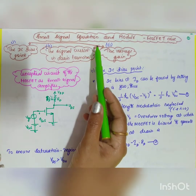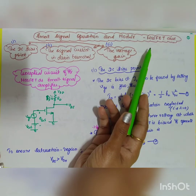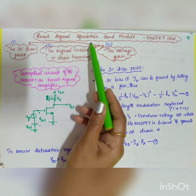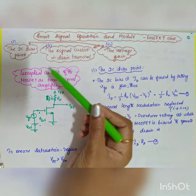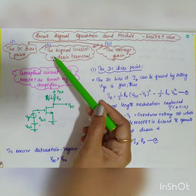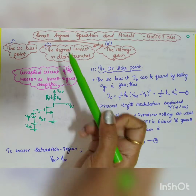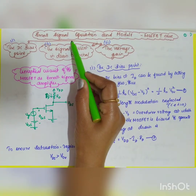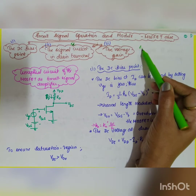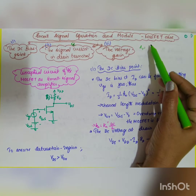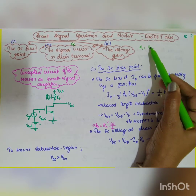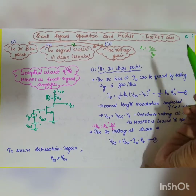The next topic in module one is small signal operation and models for the MOSFET. We have already seen BJT; now it is for MOSFET. Small signal operation means the operation of the transistor when you apply a very small AC signal. Under this, you are going to study three topics: fixing the DC bias point, the signal current in the drain terminal, and the small signal voltage gain AV, which equals output voltage VDS divided by input voltage VGS.